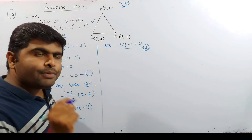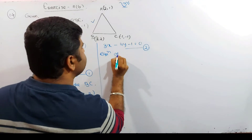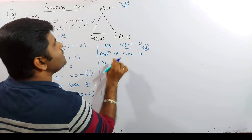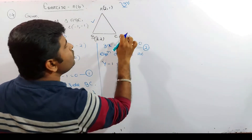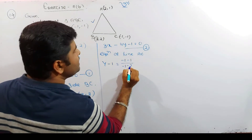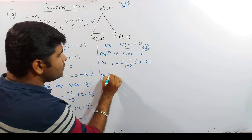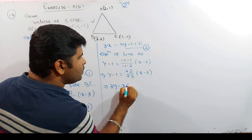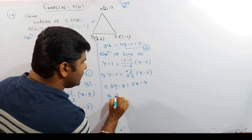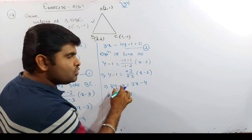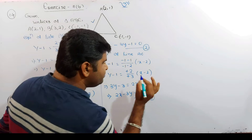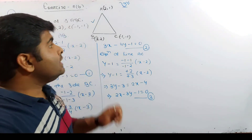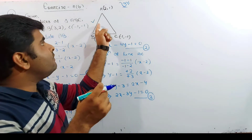Now equation of side AC. A is (2,1), C is (-1,-1). y - 1 = (-1-1)/(-1-2) × (x - 2), so y - 1 = (-2)/(-3) × (x - 2), giving 3y - 3 = 2x - 4, which means 2x - 3y - 1 = 0. This is equation 3. We now find D1, D2, D3 — the distances from the origin to the sides.